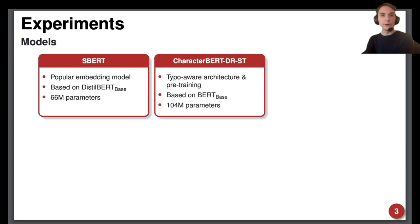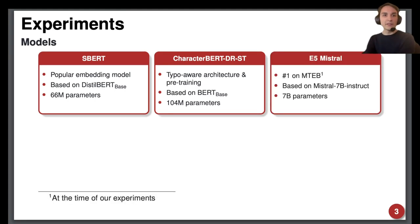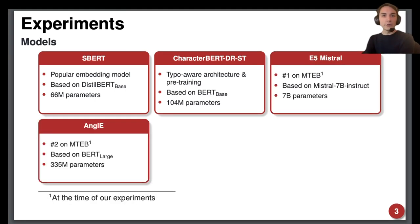And E5-Mistral and AnglE, the top two embedding models on the massive text embedding benchmark at the time of our experiments. E5-Mistral is based on Mistral and marks the largest embedding model we tested with 7 billion parameters.